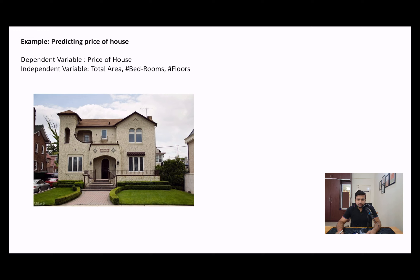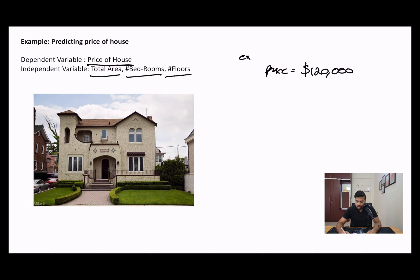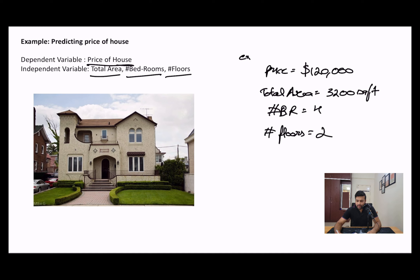So for example, you are trying to estimate the price of a house in your nearby localities. In this scenario, the price of the house becomes your dependent variable. Let us consider three parameters: the total area, the number of bedrooms, and the number of floors — these become our independent variables. For example, the price of the house is $120,000, your total area is 3,200 square feet, the number of bedrooms is 4, and number of floors is 2. So this becomes your one data point.